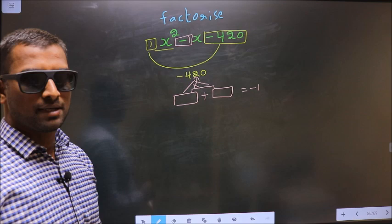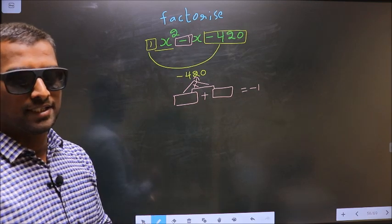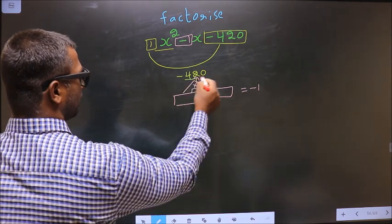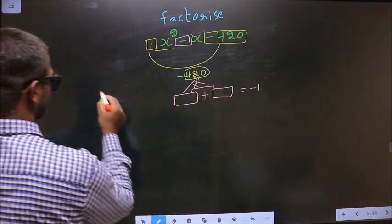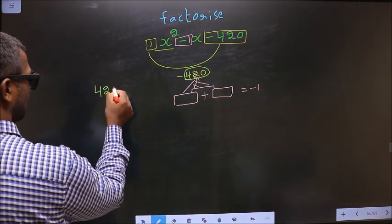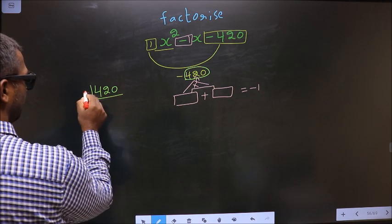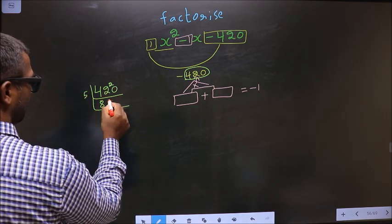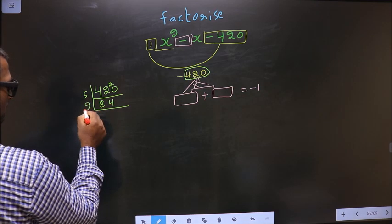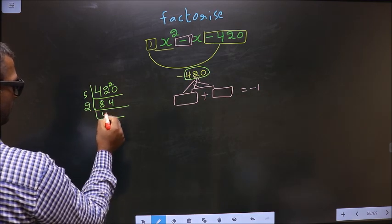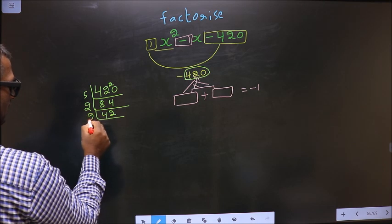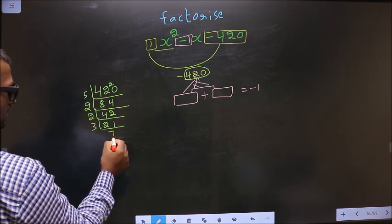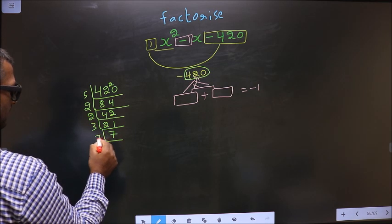Now to get those two numbers I should take LCM of 420. So I start with 5. 5×8 is 40. 5×4 is 20. Now 2. 2×4 is 2×2. Again 2. 2 and 1. Now 3. 7. 7 and 1.